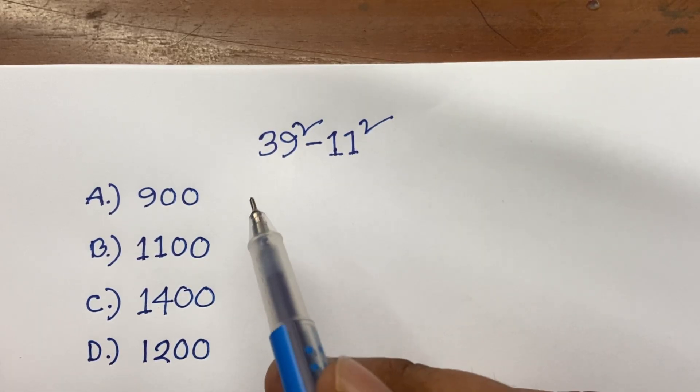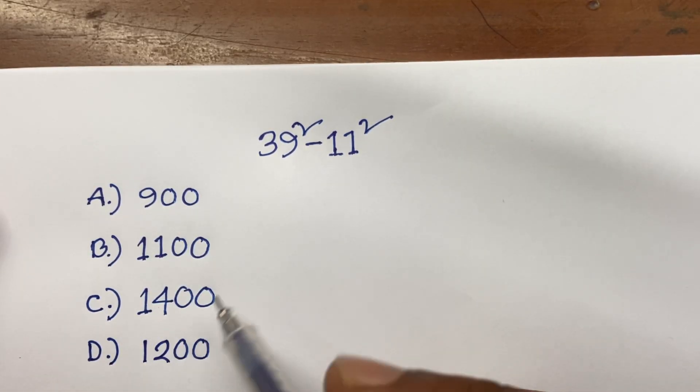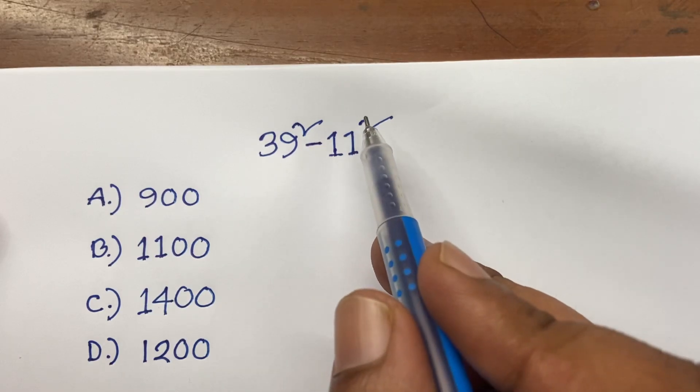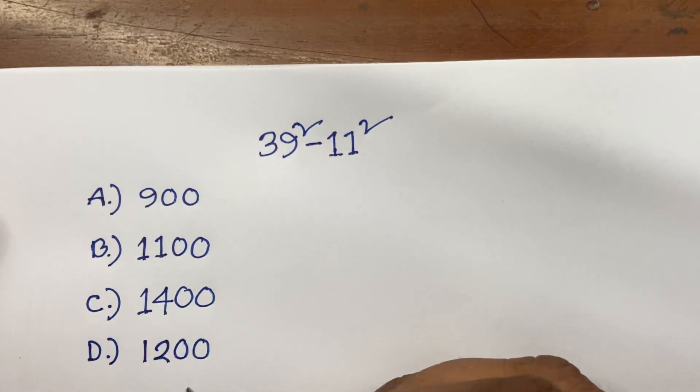Hello everyone, how to solve this question. Here are 4 options. Our question is 39 square minus 11 square, and we are going to find out what is the right option.